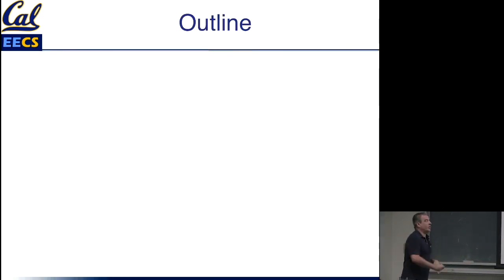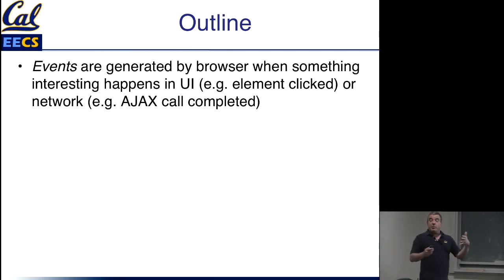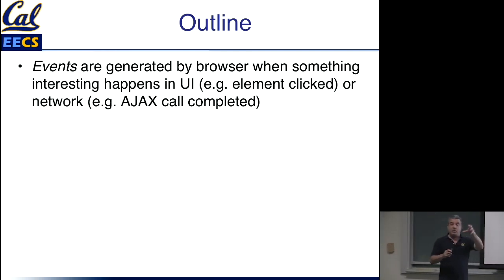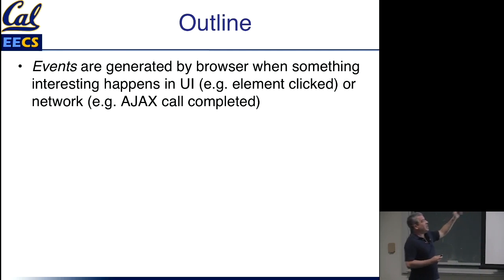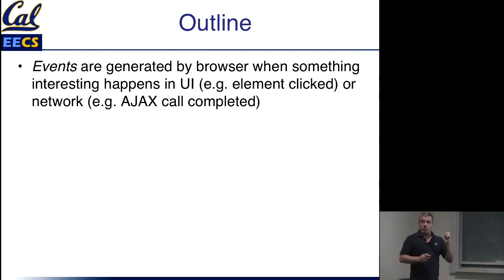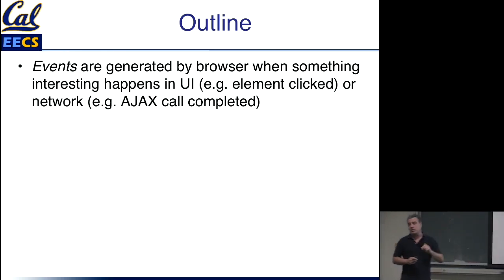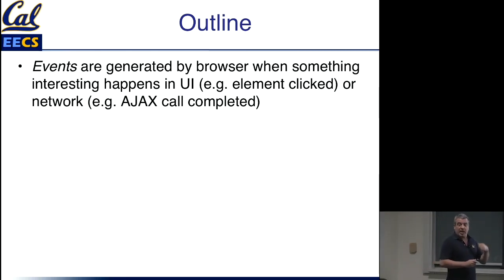Here's the sort of blueprint of where we're going to go. Now that we understand that there's this thing called the document object model, and that for each element on the page there is a corresponding JavaScript object that you can manipulate, the next thing to understand is the concept of events — something that the browser will generate when something interesting happens. It could be that something interesting happens in the UI, like somebody clicked on something, or something interesting happened on the network, like an Ajax call was made and now the response has come back.